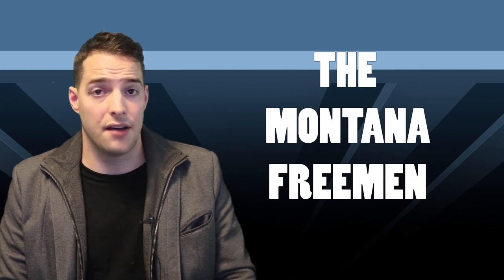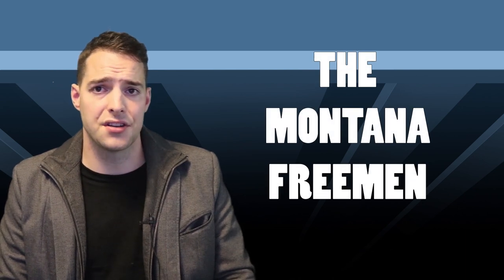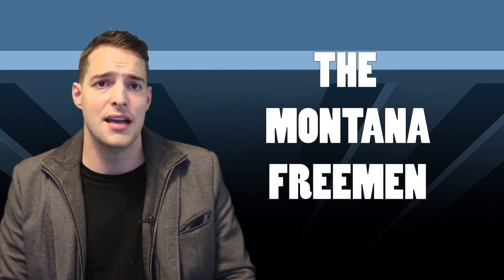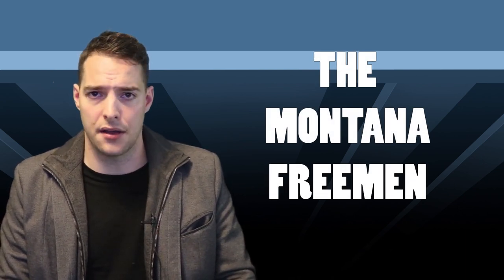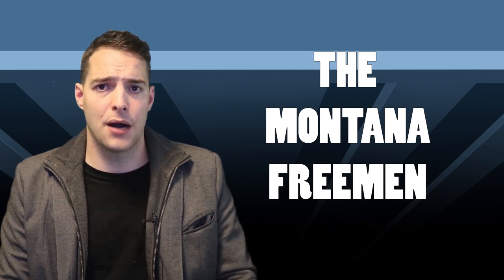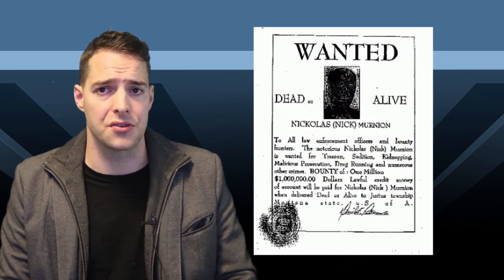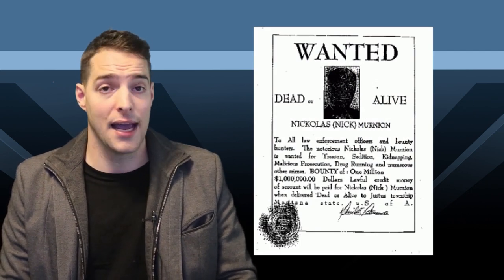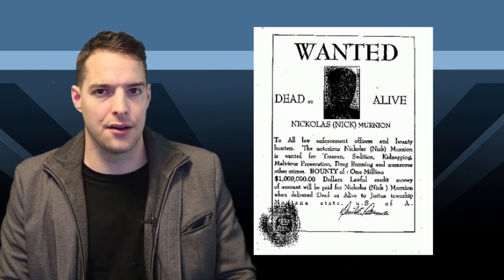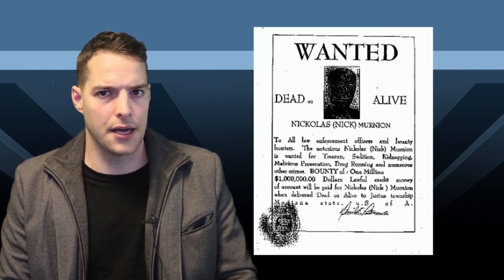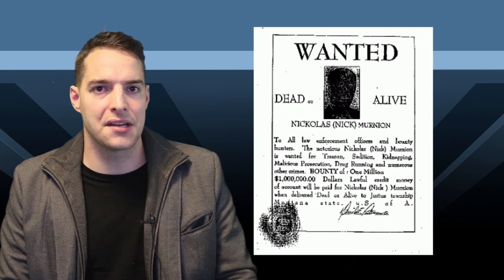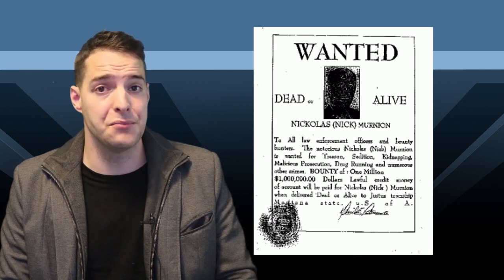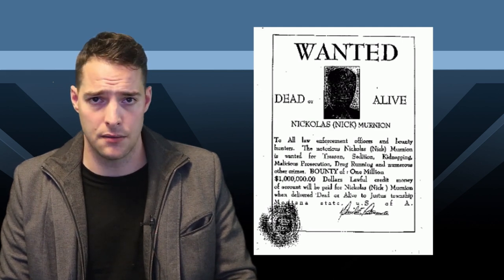In 1994, the Montana Freeman, a variation on the Sovereign Citizen Movement, seized a courthouse in Garfield County, offering bounties as high as $1 million for the county judge, attorney, and sheriff to be brought to them dead or alive. A year later, police would stop an armed attempt to kidnap the same judge that the bounty had been placed on.